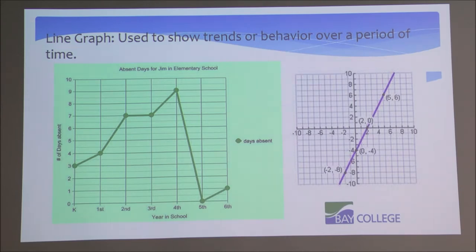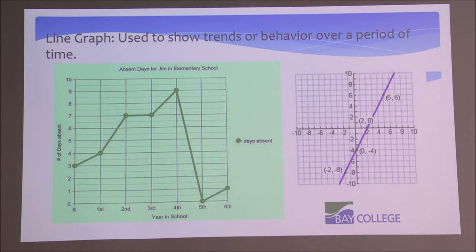The next thing we're going to look at is line graphs. Line graphs are used to show trends or behavior over a period of time. In the graph on the left, the title says Absent Days for Jim in Elementary School. The left-hand side shows numbers from 0 to 10 representing the number of days absent, and the bottom shows year in school: K, first, second, through sixth. Kindergarten is represented by K. The circles indicate the days absent, as shown in the key on the right-hand side.